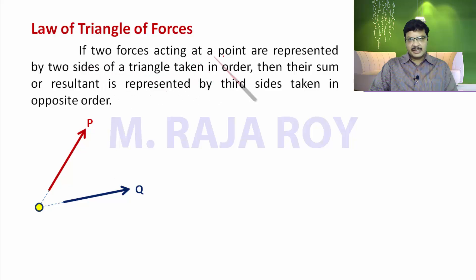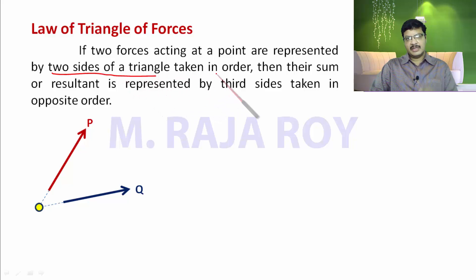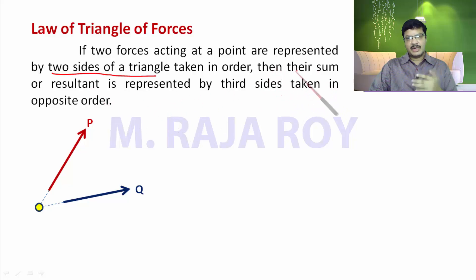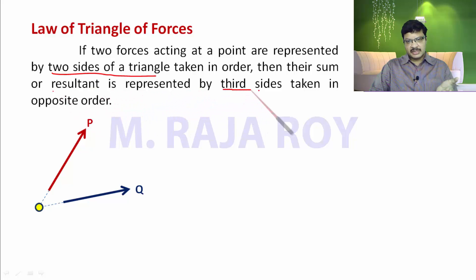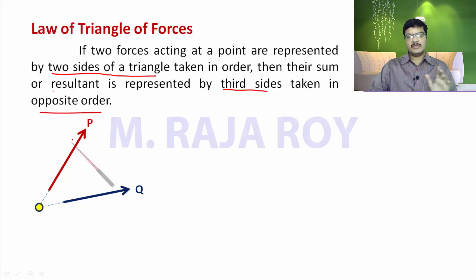If two forces acting at a point are represented by two sides of a triangle in order — that means the same order we have to follow for the first two sides — then their resultant is represented by the third side taken in the opposite order. Opposite order means in the opposite direction. To understand this, let us take two forces P and Q.